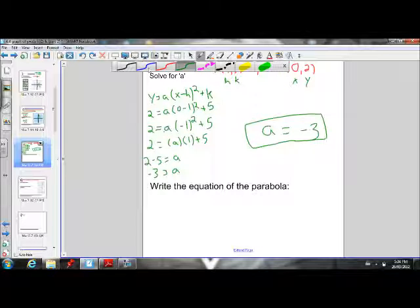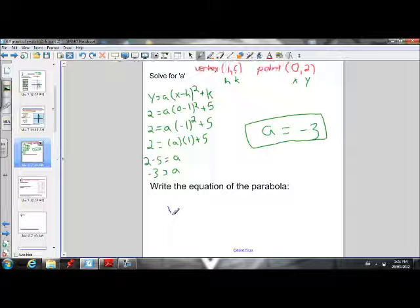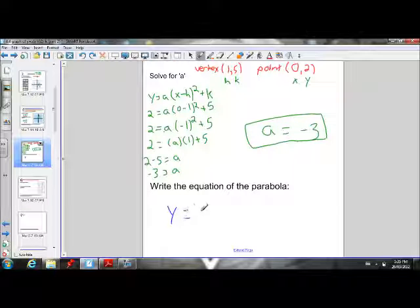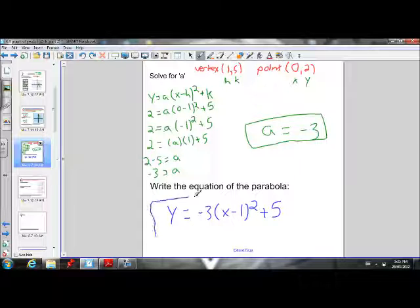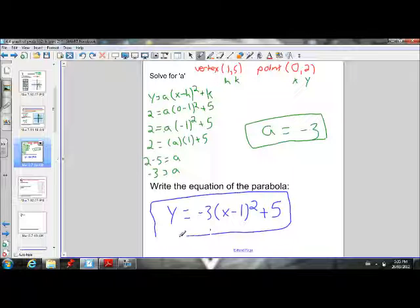So our finalized formula is going to be y equals negative 3(x minus h is 1, so minus 1), and our k is 5, plus 5. There we go. There is the equation of the parabola. That's not too bad. Easy enough. Let's go on and do another example.